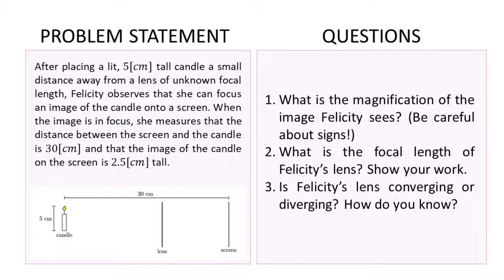Here's the problem. Feel free to pause the video to copy the problem so that it's easy for you to follow along. After placing a lit 5 cm tall candle a small distance away from a lens of unknown focal length, Felicity observes that she can focus an image of the candle onto a screen. When the image is in focus, she measures that the distance between the screen and the candle is 30 cm and that the length of the candle on the screen is 2.5 cm tall. What we want to find out is: what is the magnification of the image Felicity sees? What is the focal length of Felicity's lens? Is Felicity's lens converging or diverging, and how do we know?